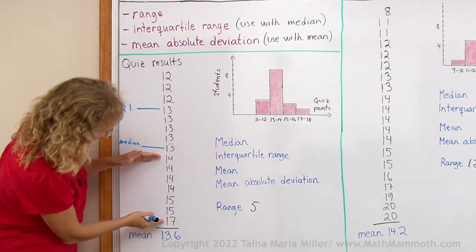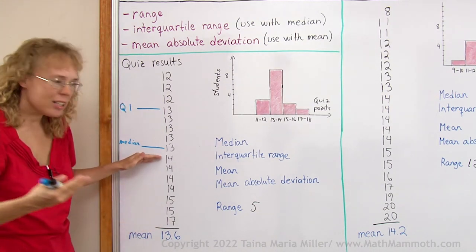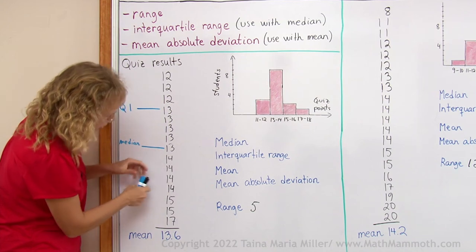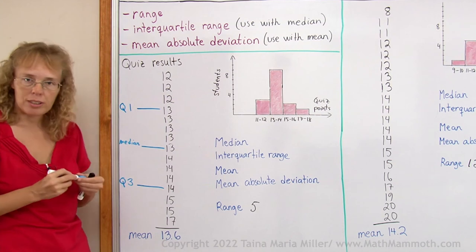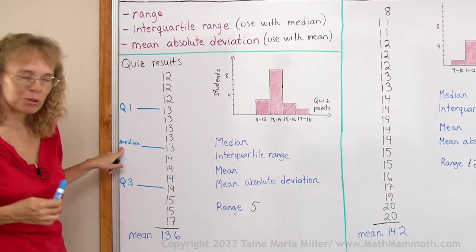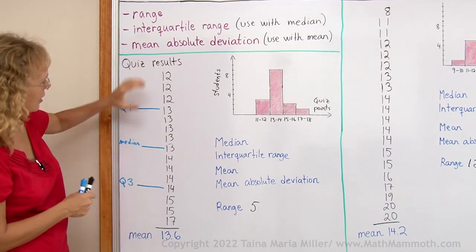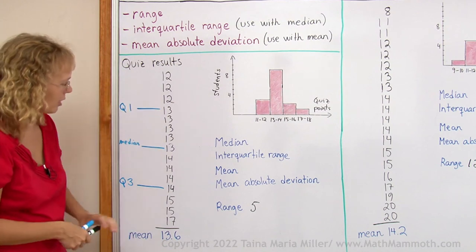So this is the first quartile or the lower quartile point. And then over here, again, I have seven items here. And I take the median of those seven, which would be the fourth item, which is this one here. It's called the third quartile. Median is the second quartile. So now the data is divided into four parts.